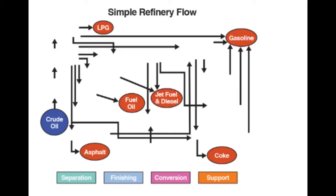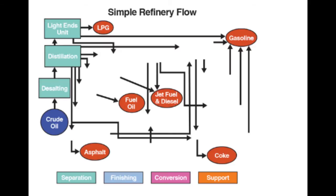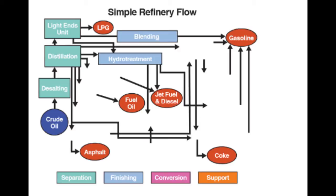Crude oil goes through desalting and distillation, and through the light ends unit separations we produce the first product — LPG, or liquefied petroleum gas, which is essentially propane and butane. The light straight-run naphtha from the light ends unit goes through blending to the gasoline pool. From the atmospheric distillation unit, kerosene and light gas oil go through hydro-treatment to produce jet fuel and diesel. Using just separation and finishing processes, we can produce LPG, straight-run gasoline (low octane), jet fuel, and diesel.